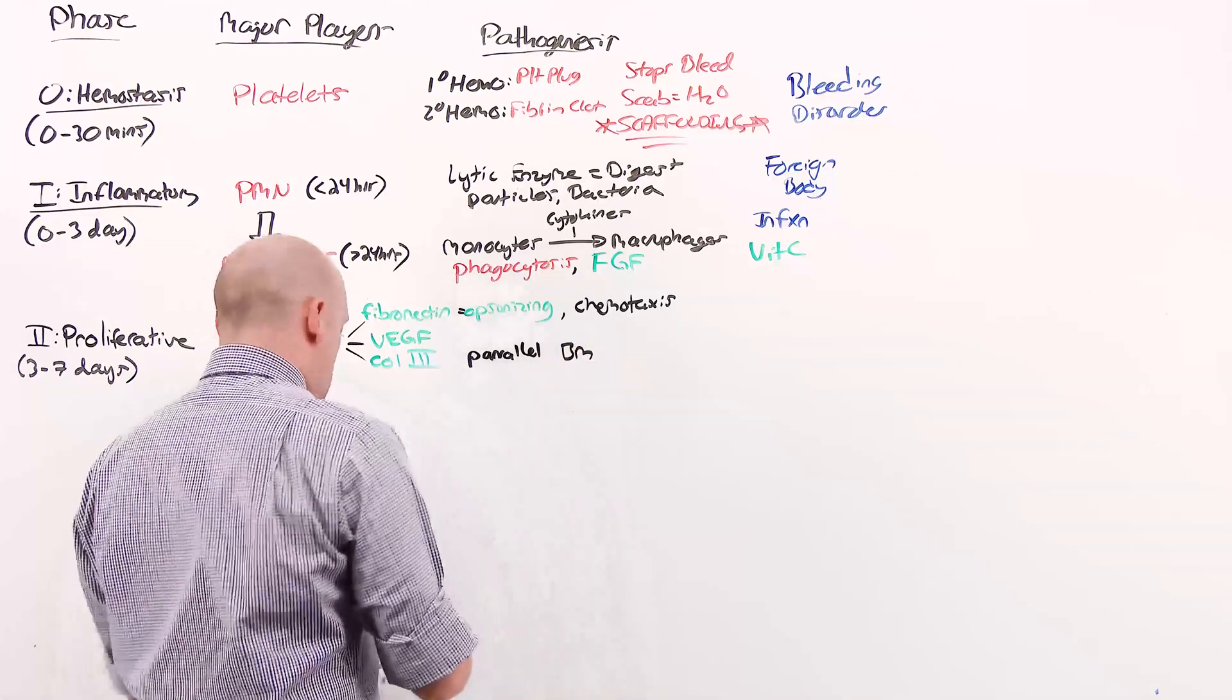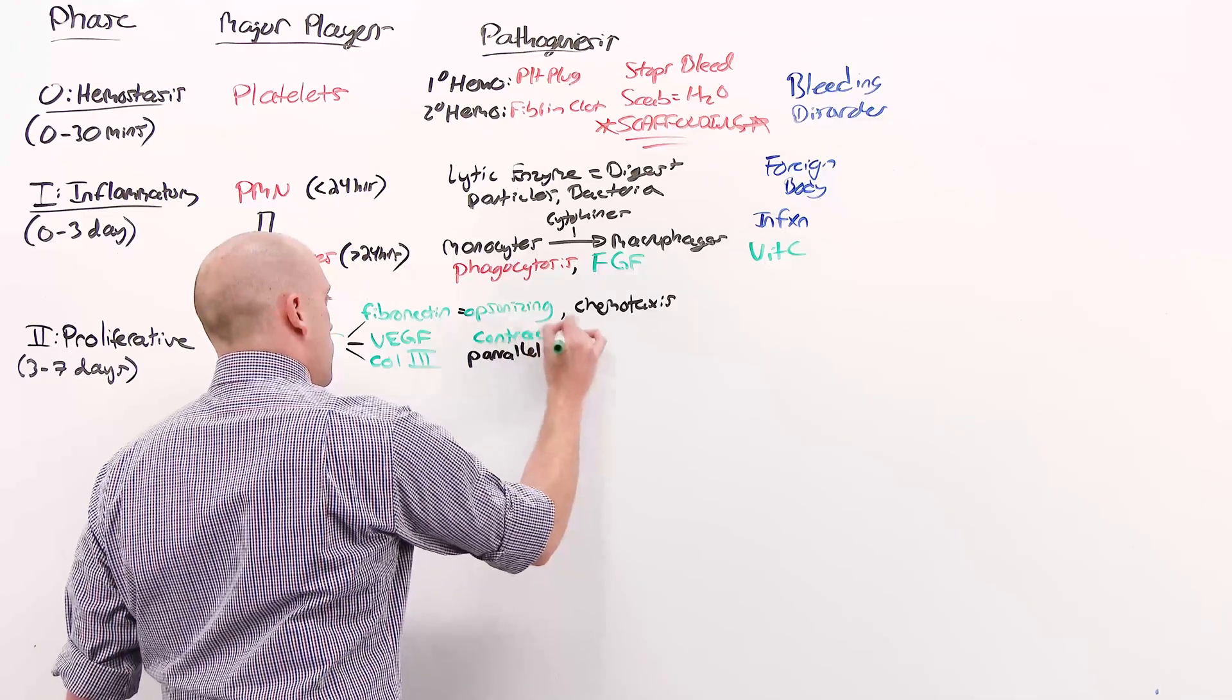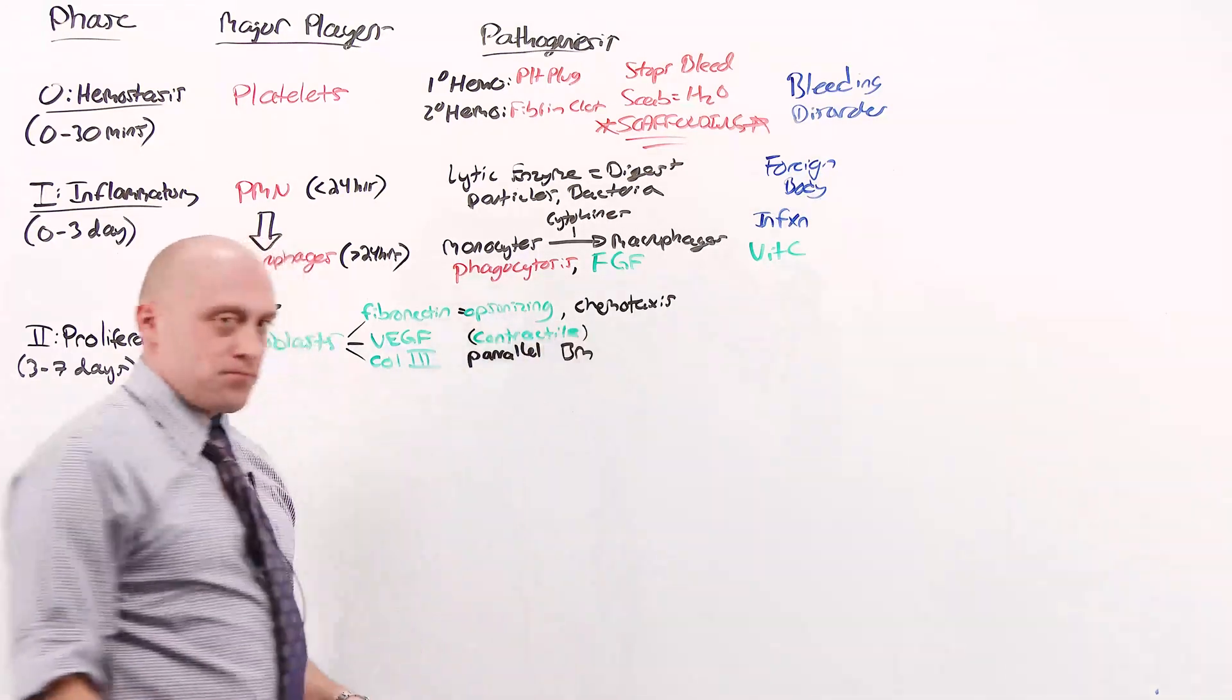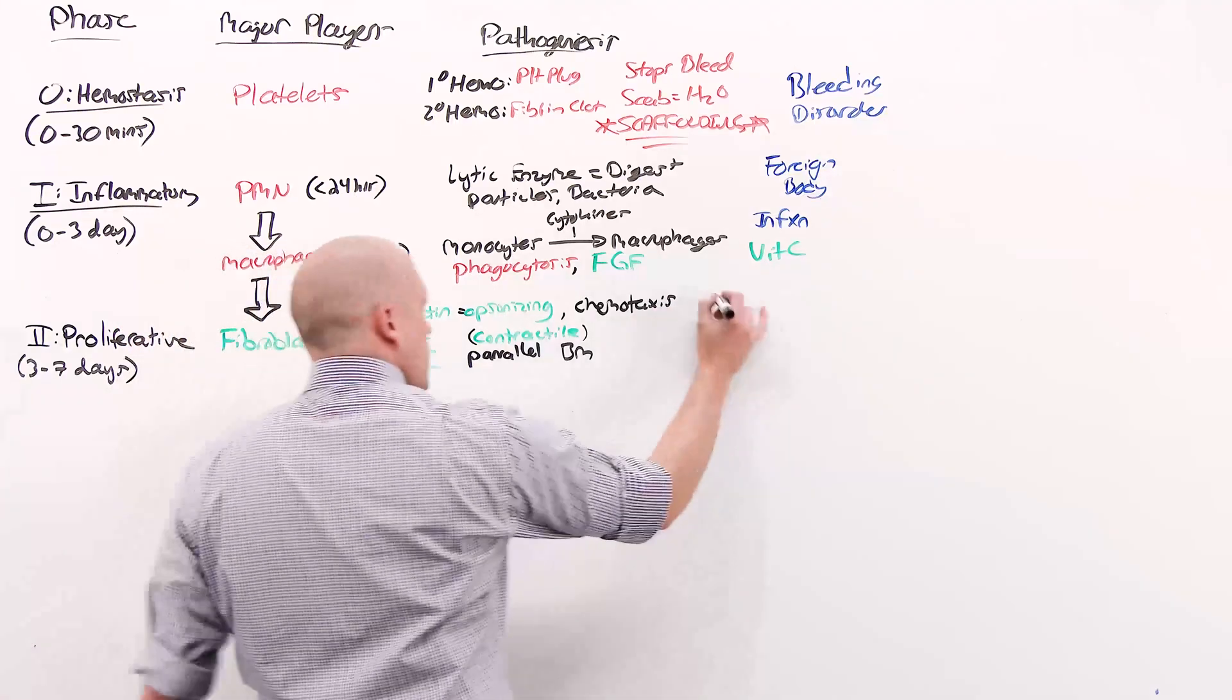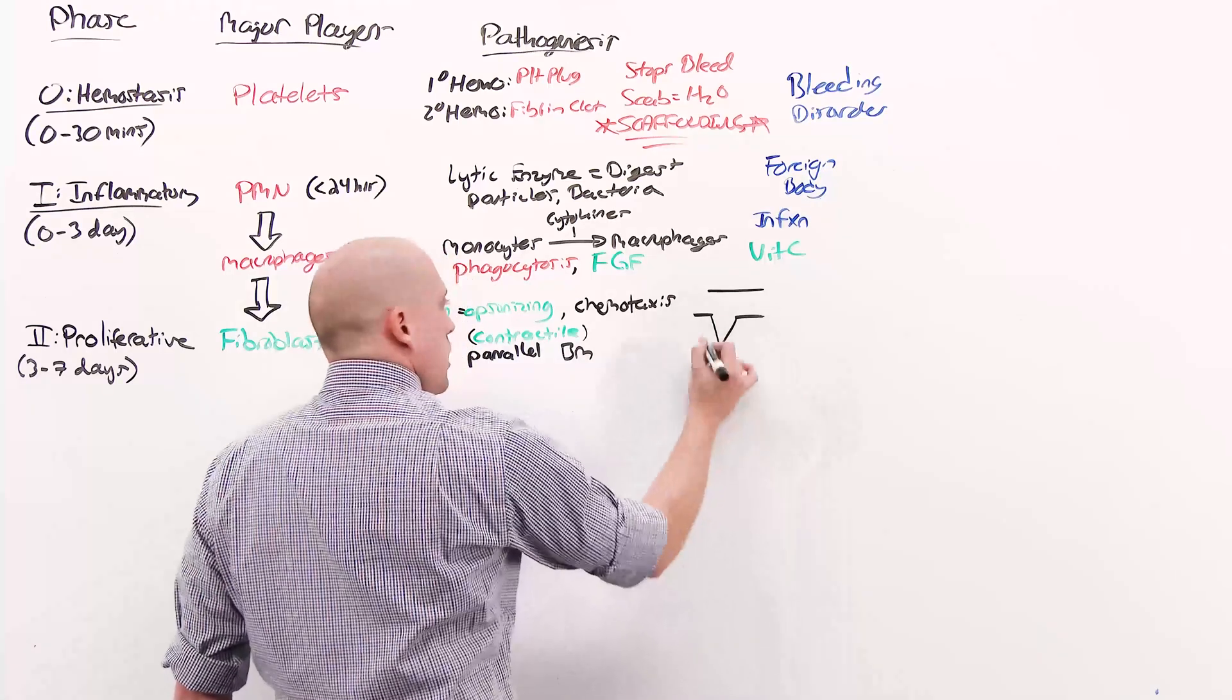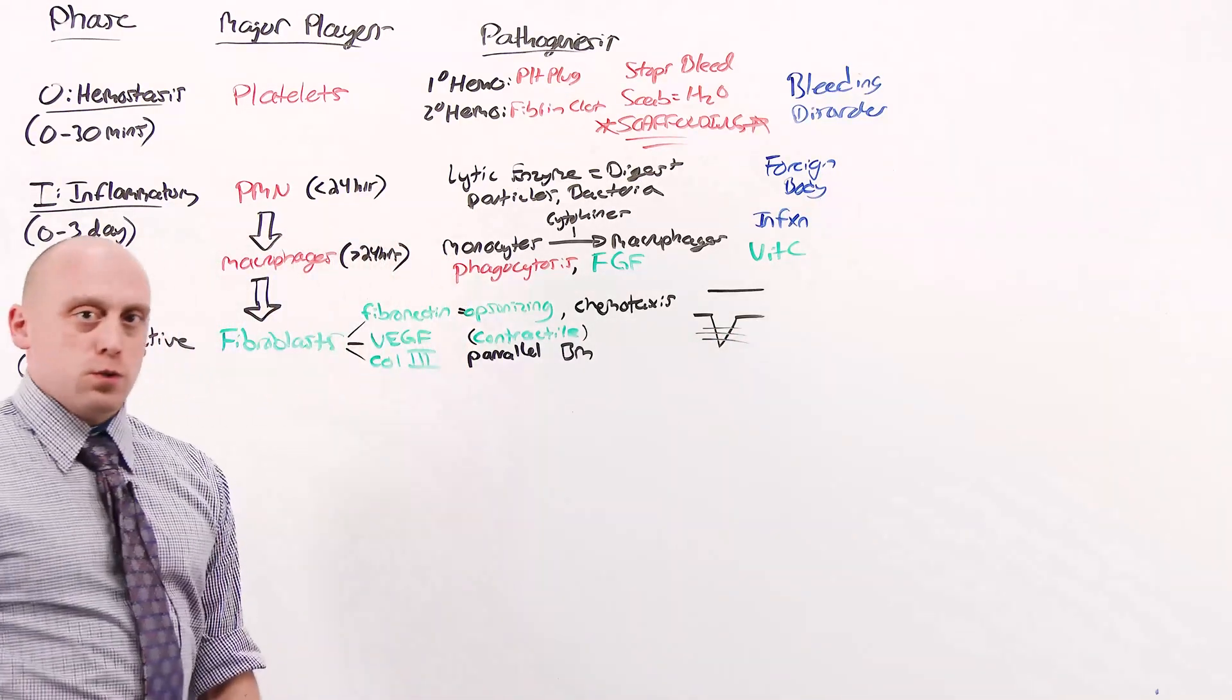This is in its contractile position. It has no tensile strength. This was our intact epithelium. We made a cut. The collagen is being laid down, parallel to the basement membrane, perpendicular to the wound.